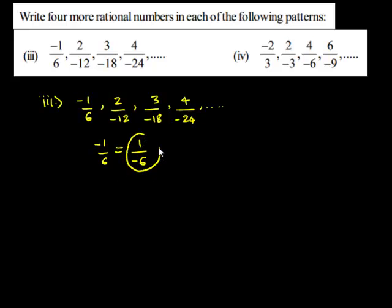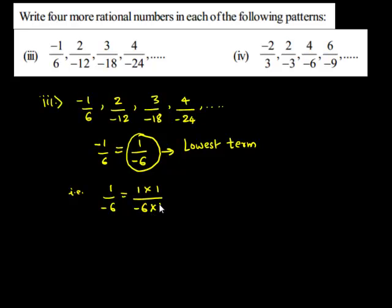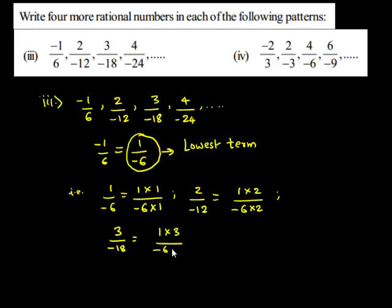This 1 upon negative 6 is in its lowest term. So 1 upon negative 6 can be written as 1 multiplied by 1 upon negative 6 multiplied by 1. The next term, 2 upon negative 12, can be written as 1 multiplied by 2 upon negative 6 multiplied by 2. The third term, 3 upon negative 18, can be written as 1 multiplied by 3 upon negative 6 multiplied by 3. Similarly, 4 upon negative 24 can be written as 1 multiplied by 4 upon negative 6 multiplied by 4.